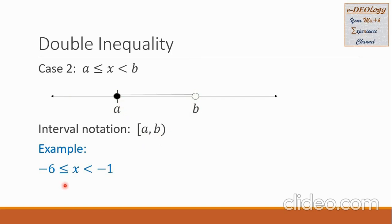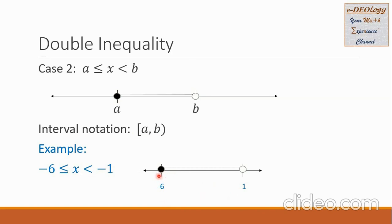Example: negative 6 is less than or equal to x and x is less than negative 1. On the number line, negative 6 is on the left side and negative 1 is on the right. We connect the two numbers. Negative 6 is part of the solution, so we put a solid dot. For negative 1, we put a hole because it is not part of the solution. For the interval notation, we put negative 6 and negative 1 as the end numbers. We use a square bracket for negative 6 because it is part of the solution, and parentheses for negative 1 because it is not.